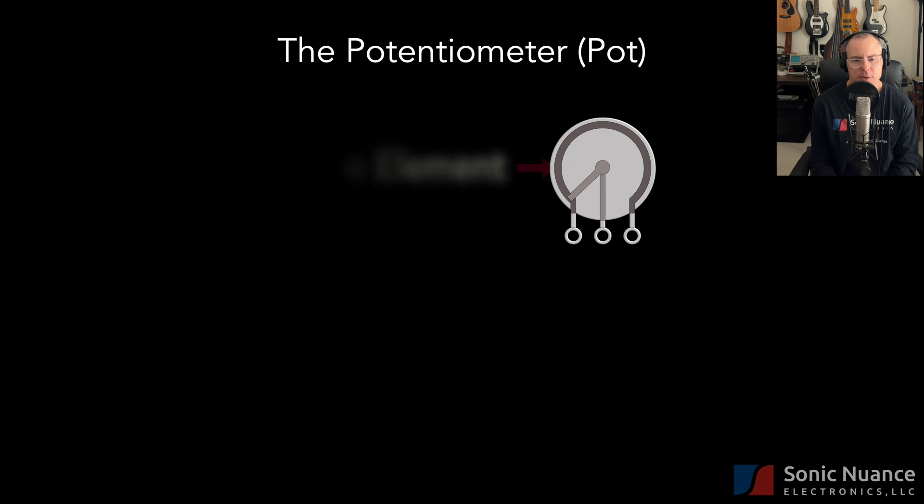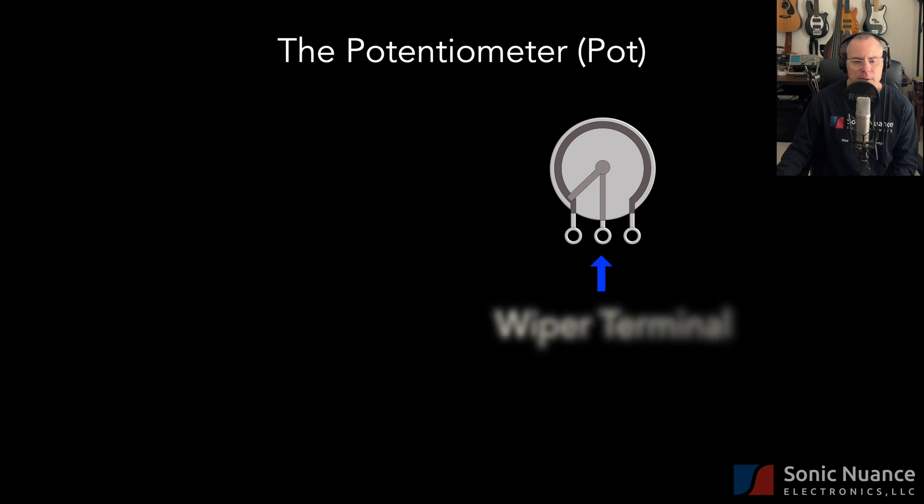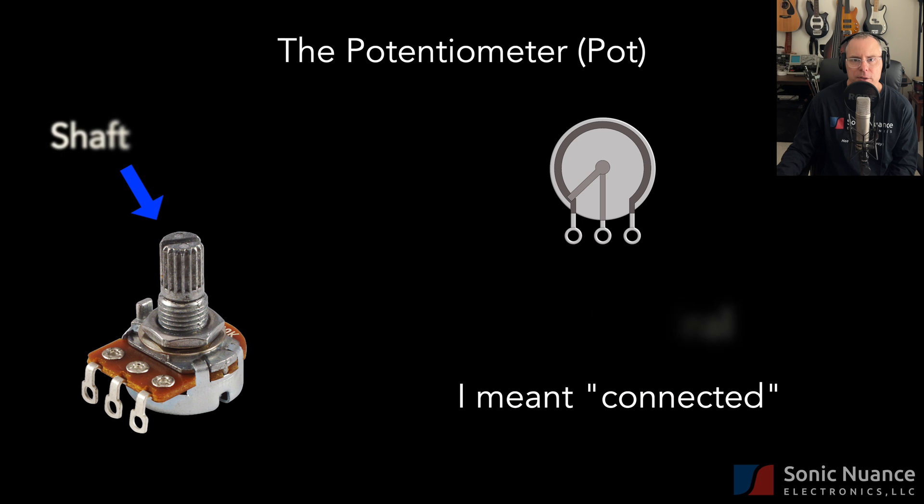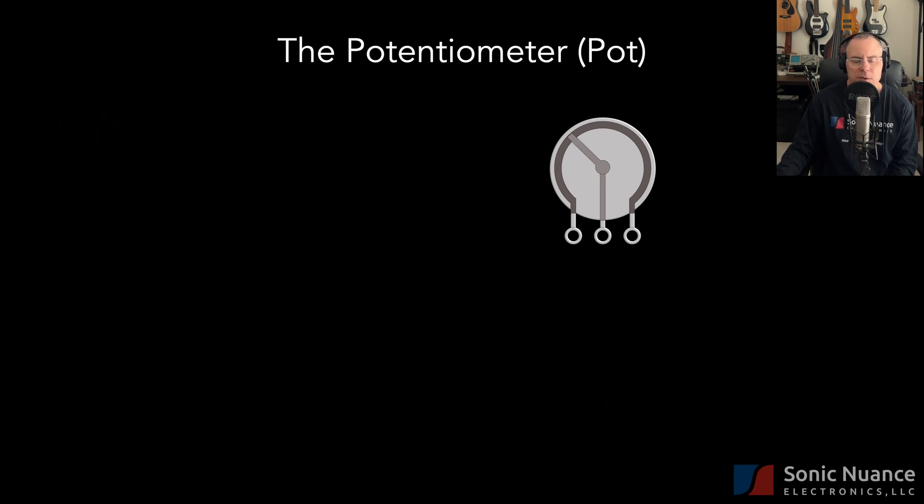If we have a diagram of this pot looking from the back, if I show the inside of the pot, we have what we call here a resistive element that goes from this terminal to this terminal. And there's another thing called a wiper here that's controlled to that shaft that we saw earlier. As you turn the shaft, this wiper moves and contacts this resistive material. And what you end up with is two variable resistors.